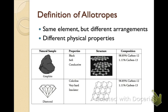Allotropes are the same element but different arrangements. And since they have different arrangements, they'll have different physical properties.